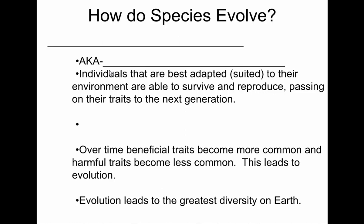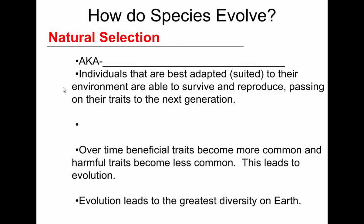We started talking on Friday about how species change over time, and we're going to continue talking about it today. The process that Darwin described in his research he called natural selection. Basically what it means is nature chooses which organisms survive and which do not, and that selection is based on how well they can live in their ecosystem, in their environment.